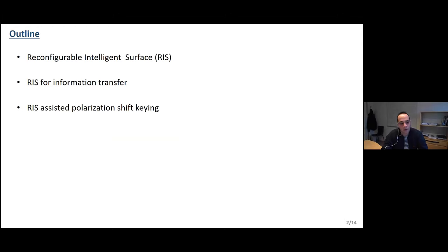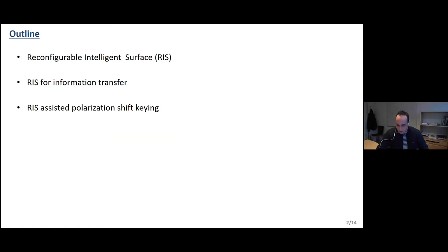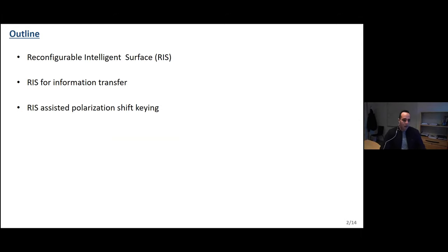The outline of this talk will be as follows. First, I will give a brief introduction on the reconfigurable intelligent surface, RIS, and its applications. After that, I will speak about one of the promising applications for RIS, which is to use RIS for information transfer. Then I will present our proposed scheme, which mainly depends on polarization shift keying.